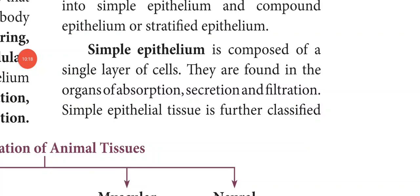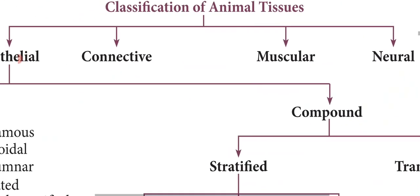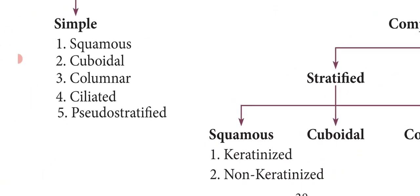Simple epithelium is composed of a single layer of cells. It is found in the organs of absorption, secretion, and filtration. As we have learned, simple epithelium is classified into squamous epithelium, cuboidal epithelium, columnar epithelium, ciliated epithelium, and pseudo-stratified epithelium.